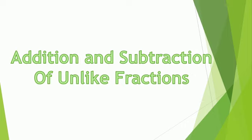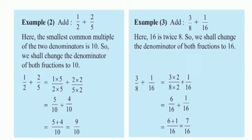In this lecture we are going to study addition and subtraction of unlike fractions. Now here are some examples of unlike fractions and how to convert them into like fractions and how to do the addition. In example number 2: add 1 upon 2 plus 2 upon 5. This is an unlike fraction, so we have to convert them first into like fractions. The smallest common multiple of the two denominators is 10.